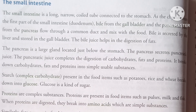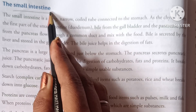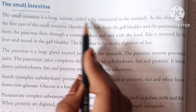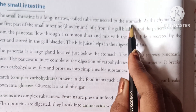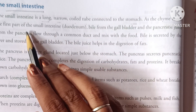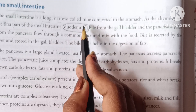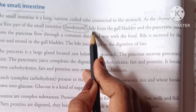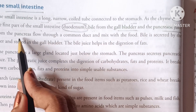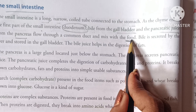After chyming, the semi-digested food is transported to the small intestine. The small intestine is a long, narrow, coiled tube connected to the stomach. This chyme enters the first part of the small intestine, which is called the duodenum.